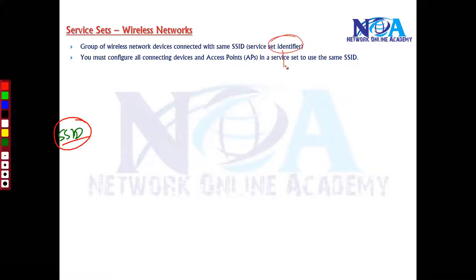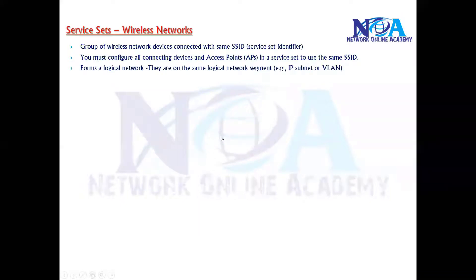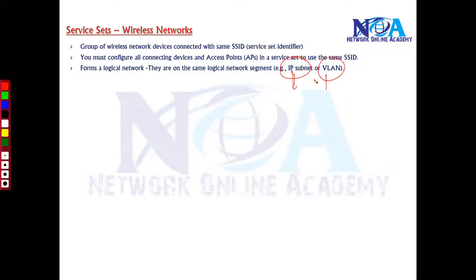The set of devices connecting to one common network is called a service set, and the ID used to identify that service set is called the SSID. All devices must be part of the same SSID to exchange information. You can represent this as one logical network where the devices are part of the same subnet or the same VLAN.